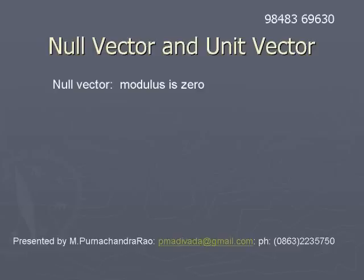Null vector and unit vector. A null vector is a vector whose modulus is 0. The modulus of vector p̄ is equal to 0, and if it is 0, then it is called a null vector.